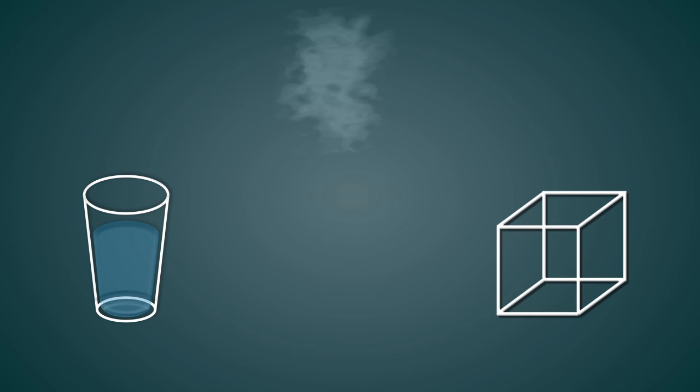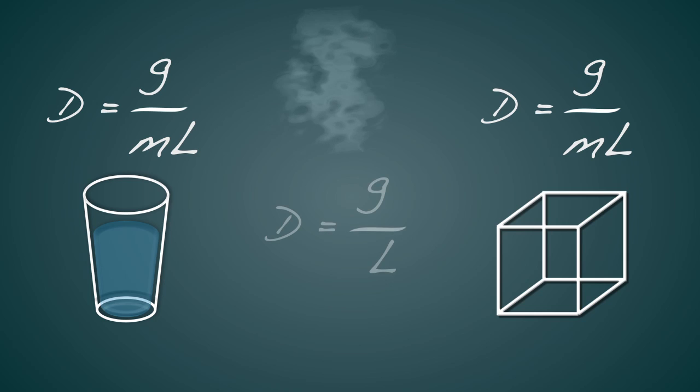So the units that are normally used to describe density, mass divided by volume, for solids and liquids, is grams per milliliter. Whereas for gases, we normally use the units grams per liter.